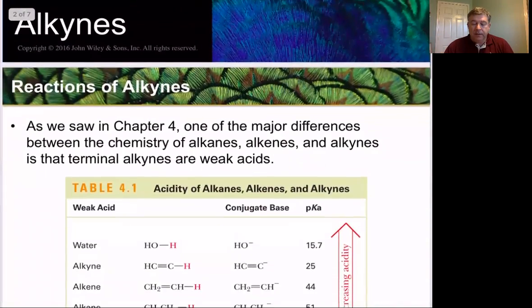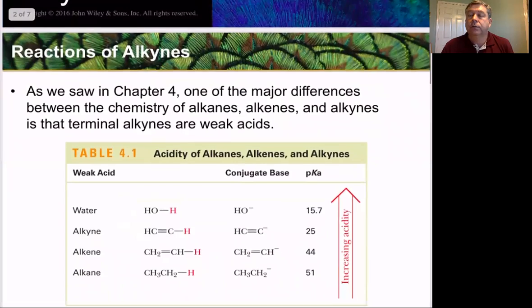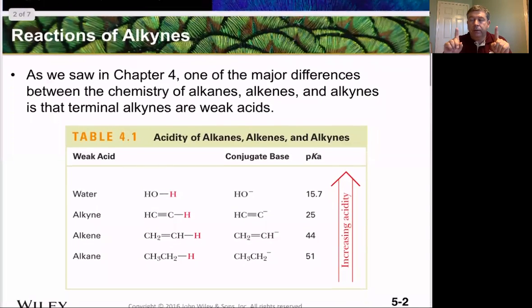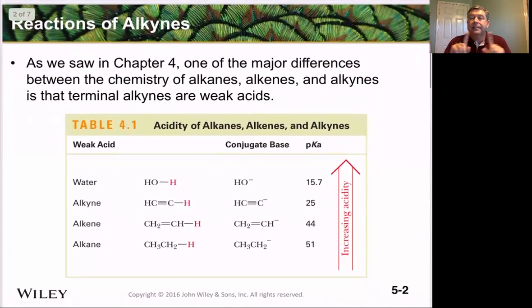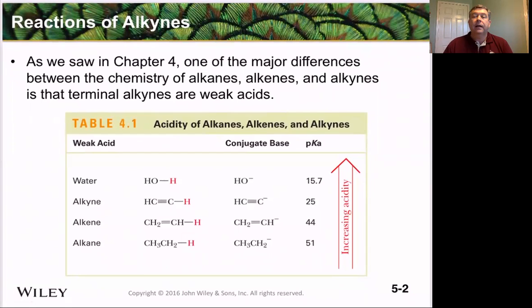Alkenes had two pi orbitals that overlap to form a single pi bond. Alkynes have two pi orbitals that allow it to form two pi bonds. The first thing we saw in the differences between alkenes and alkynes is the fact that the hydrogen at the end is more acidic than any of the other hydrocarbons.